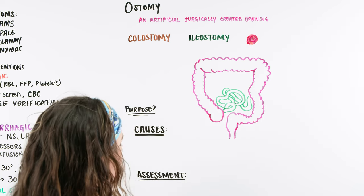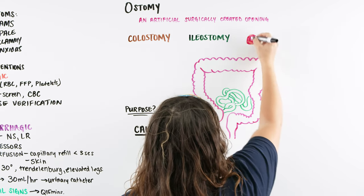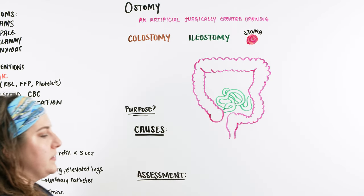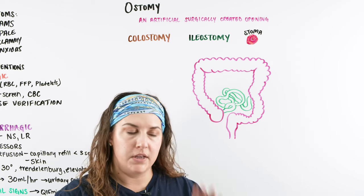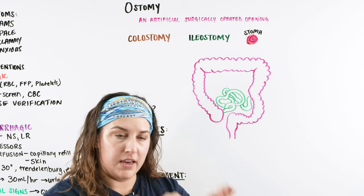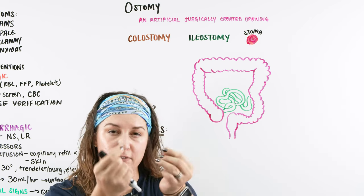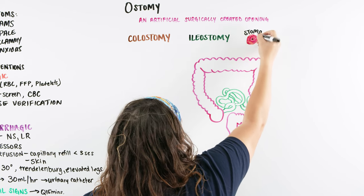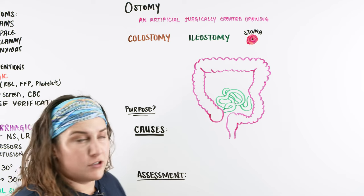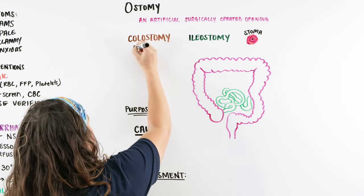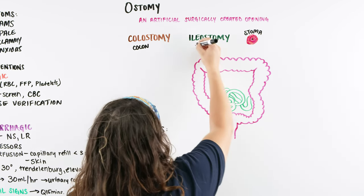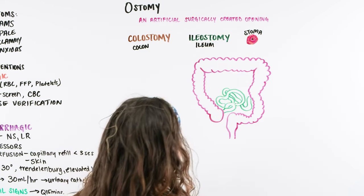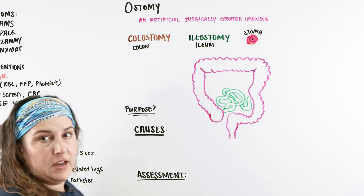When we create this opening we will then have a stoma. A stoma is what we will see when we have an ostomy. Basically, picture cutting into the abdomen and taking the lining of our colon and attaching it to the skin so that it envelopes and turns out on itself on top of the skin, creating like a little button with a hole in the middle — usually pink and shiny. Some patients will have a colostomy, which is their colon turned out, and some will have an ileostomy, which is the ileum — part of the small intestine — turned out.